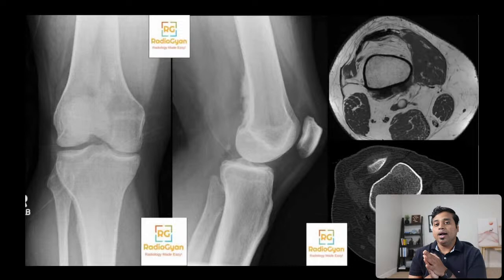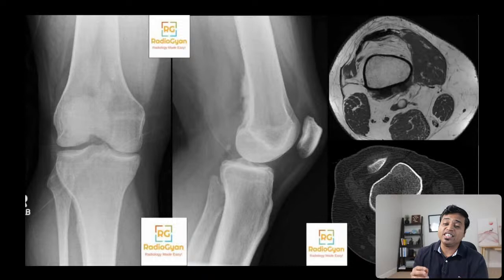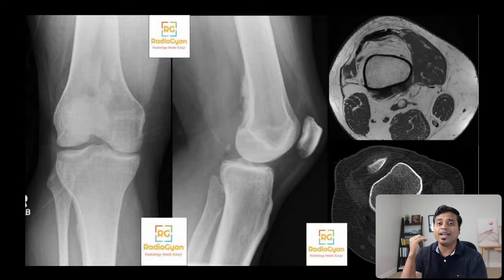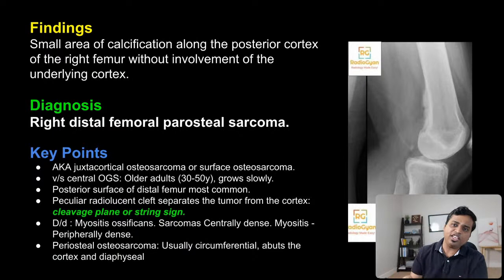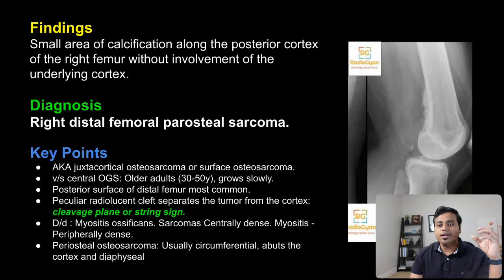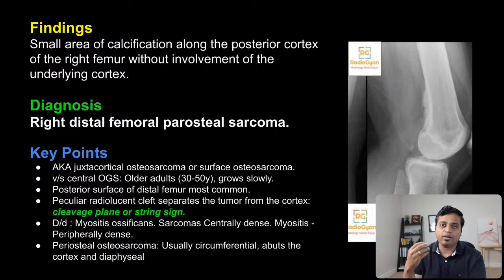The more important characteristic of periosteal osteosarcomas is that they are usually circumferential and affect the diaphysis. Parosteal osteosarcomas are usually focal and metaphyseal — the posterior distal femur is a very common location. The cleavage plane is also known as the string sign — it looks like a string separating the tumor from the bone. Compared to central osteogenic sarcomas, parosteal tumors are seen in older patients and grow very slowly, whereas central osteogenic sarcomas are more aggressive and are seen in pediatric patients. The posterior surface of the femur is a very typical location.